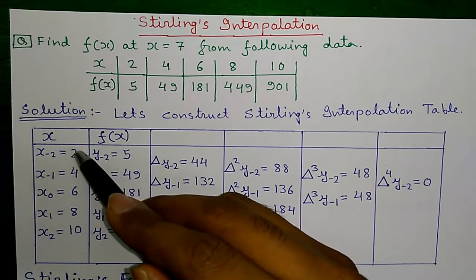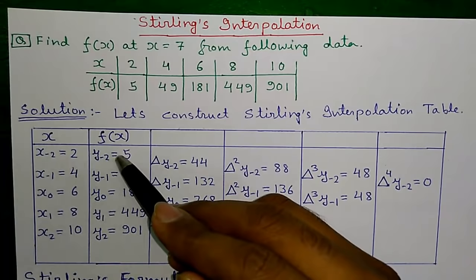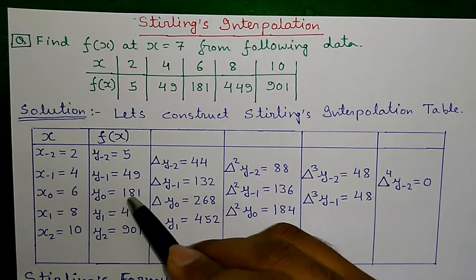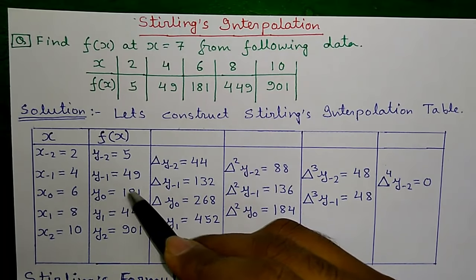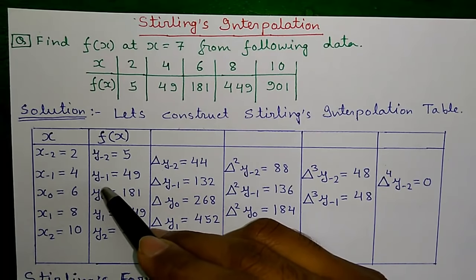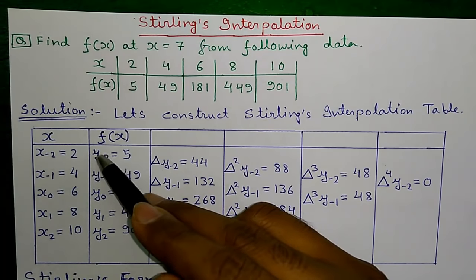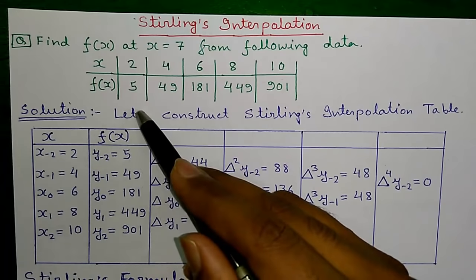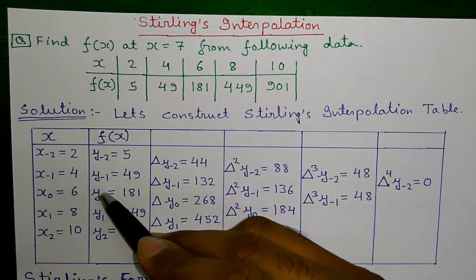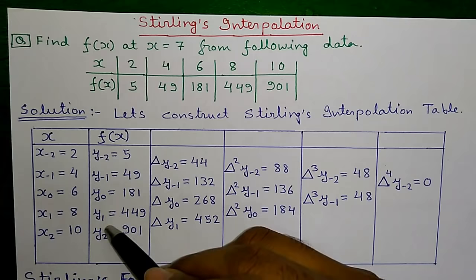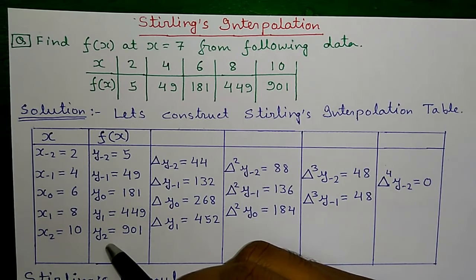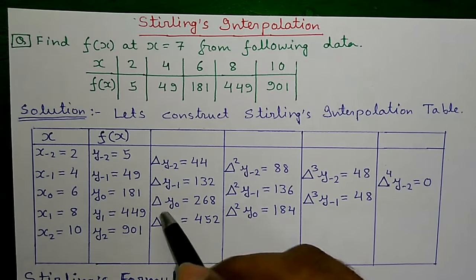The value corresponding to x₀ will be y₀ in the y column. Values above y₀ will be y₋₁, y₋₂, and so on — negative increment. Values below y₀ will be y₁, y₂, and so on — positive increment. Next, starting from the bottom.